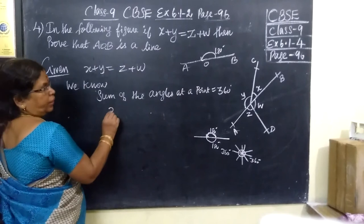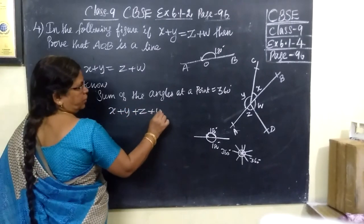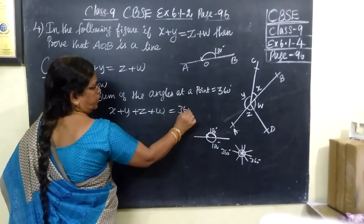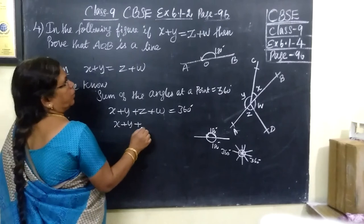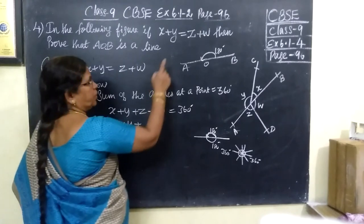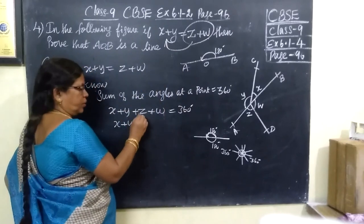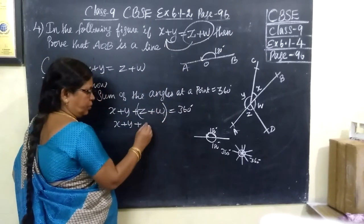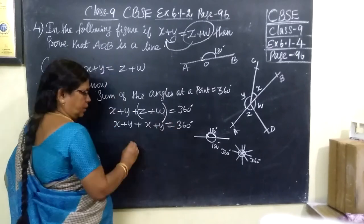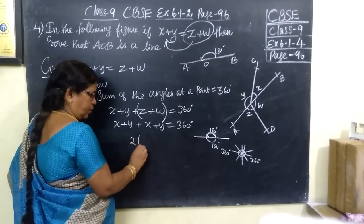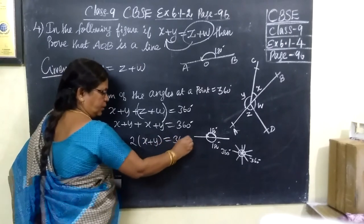So, X plus Y plus Z plus W equals 360 degrees. And X plus Y plus Z plus W is also equal to X plus Y plus X plus Y — because instead of Z plus W, you can write X plus Y itself. So, this gives twice of X plus Y equals 360 degrees.